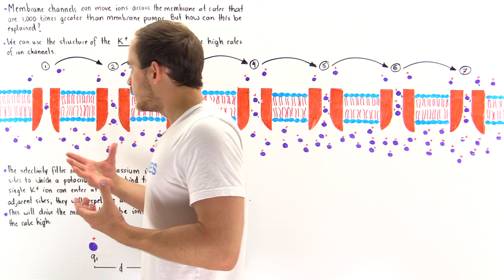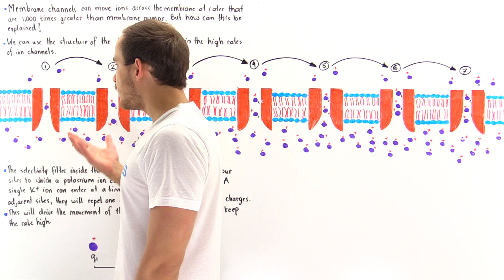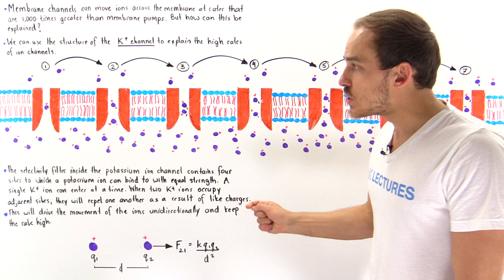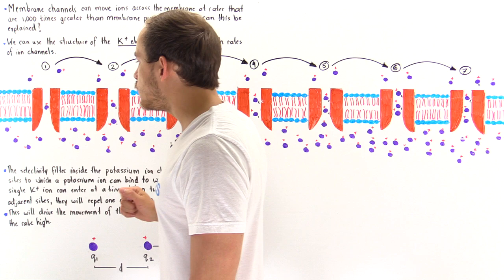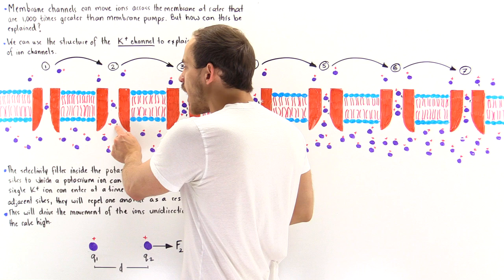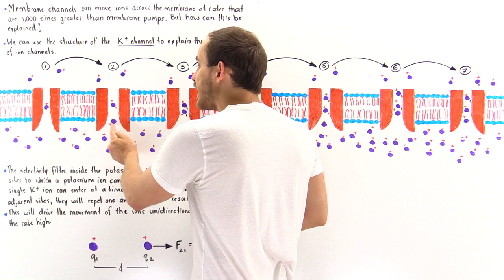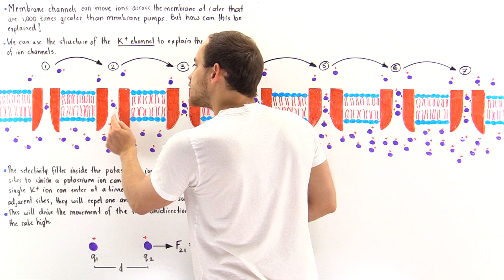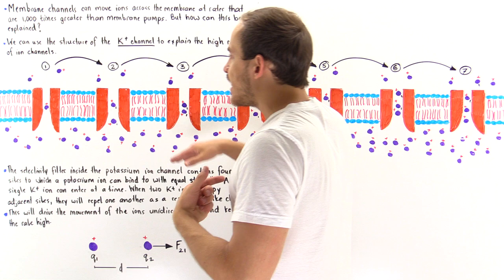Looking at the diagram: a potassium ion binds onto site number one inside the selectivity filter. What drives the quick and efficient movement of that ion along the selectivity filter? As a result of the electrochemical gradient, another ion moves into the aqueous environment inside the cavity. Before this second ion reaches site one, it moves into site two, driven by electrostatic repulsion.